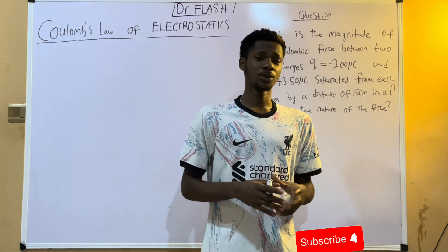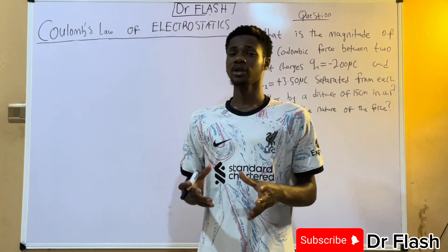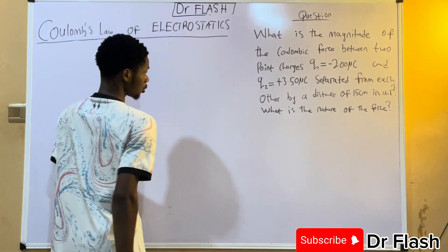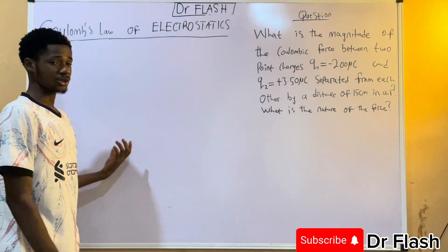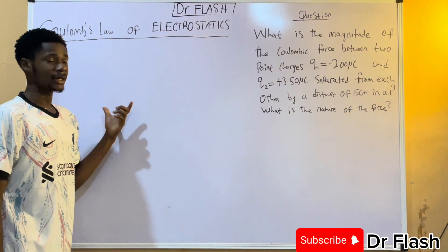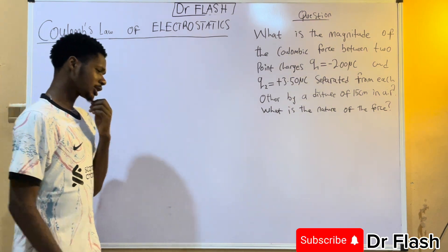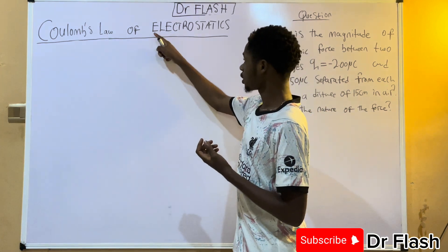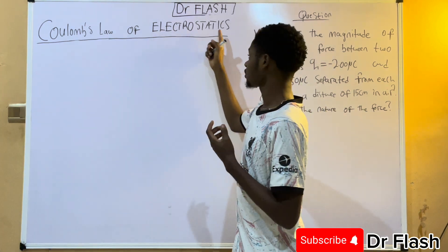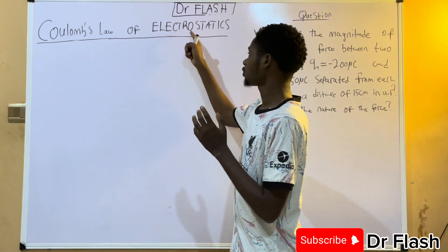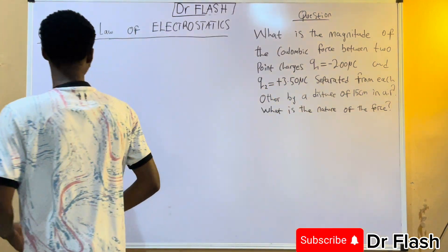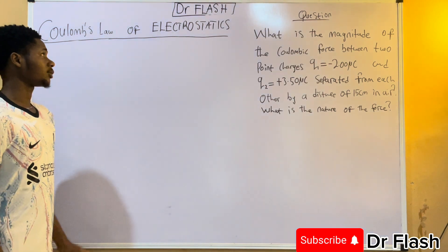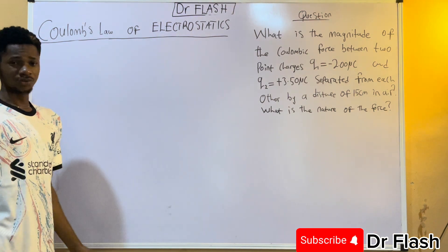In today's video we're going to be talking about Coulomb's Law of electrostatics. We also have a problem on the board which we are going to be attempting after we are done with the laws and the explanations. But first of all, what is electrostatics? Looking at the name, electrostatics talks about two things: 'electro' and 'static.' Static simply means something that's at rest, and electro comes from the word electricity. So electrostatics is simply the study of electrical charges.